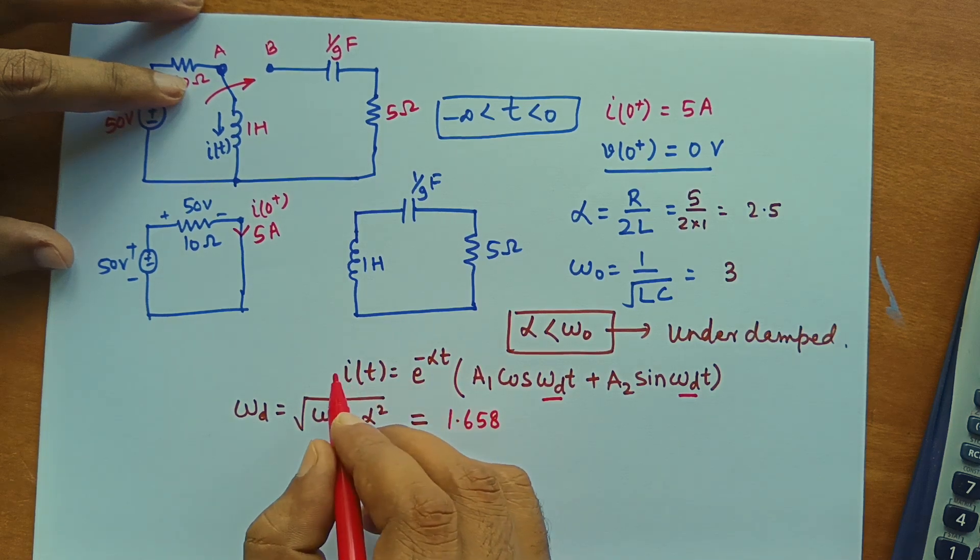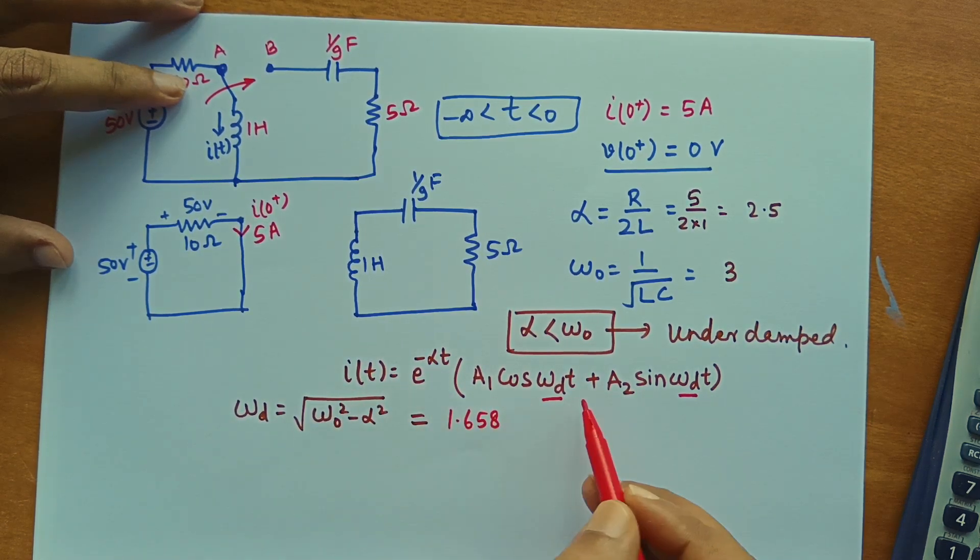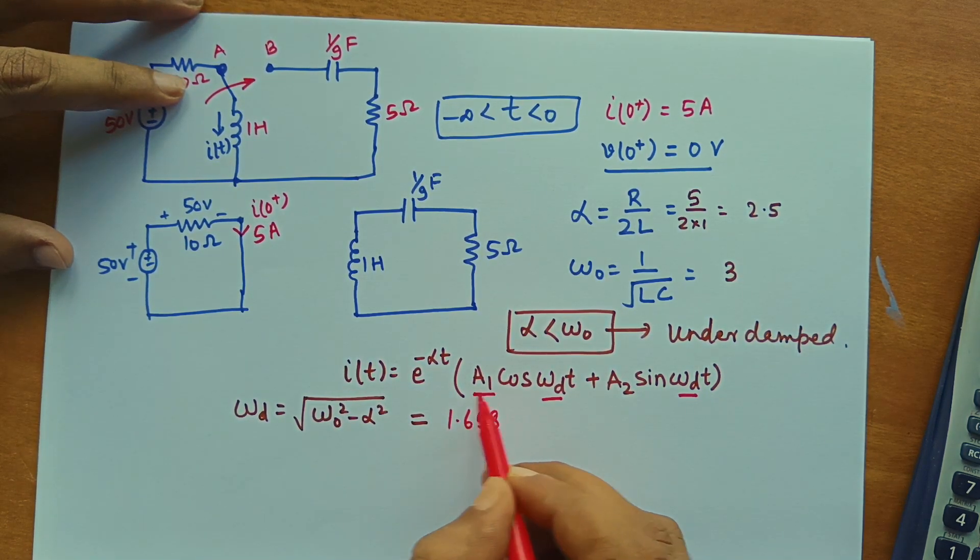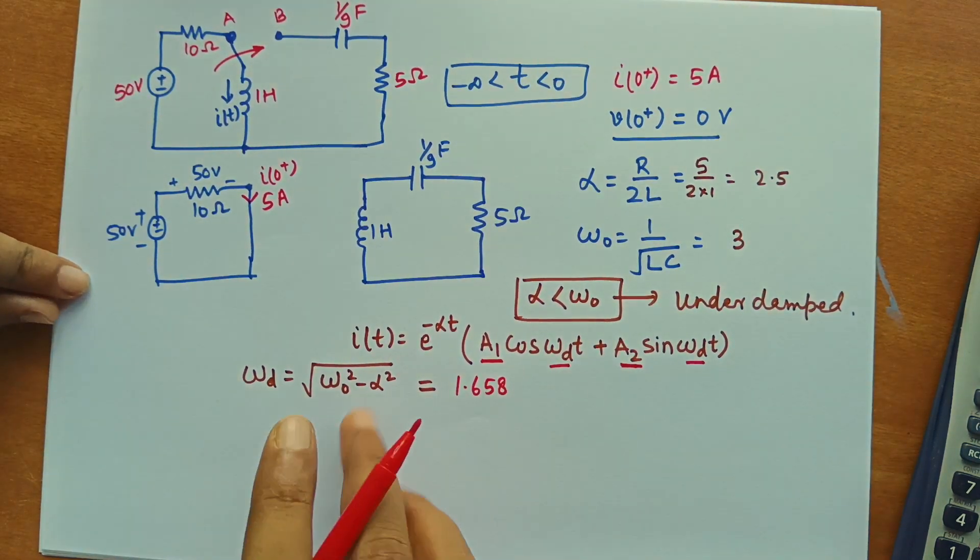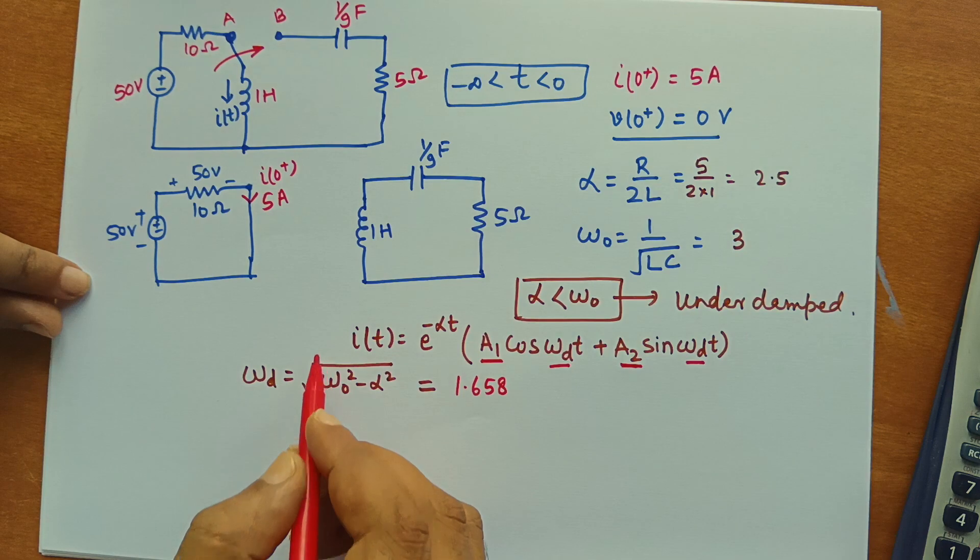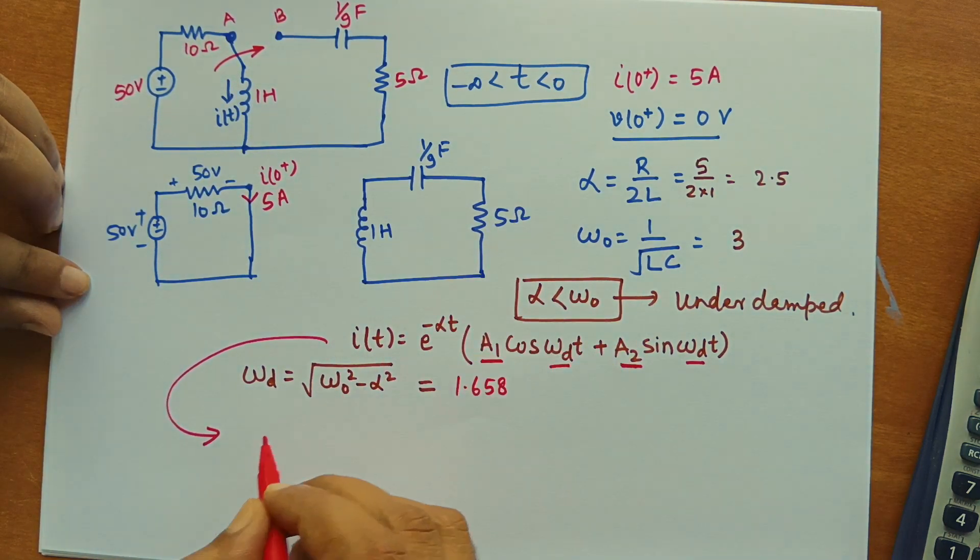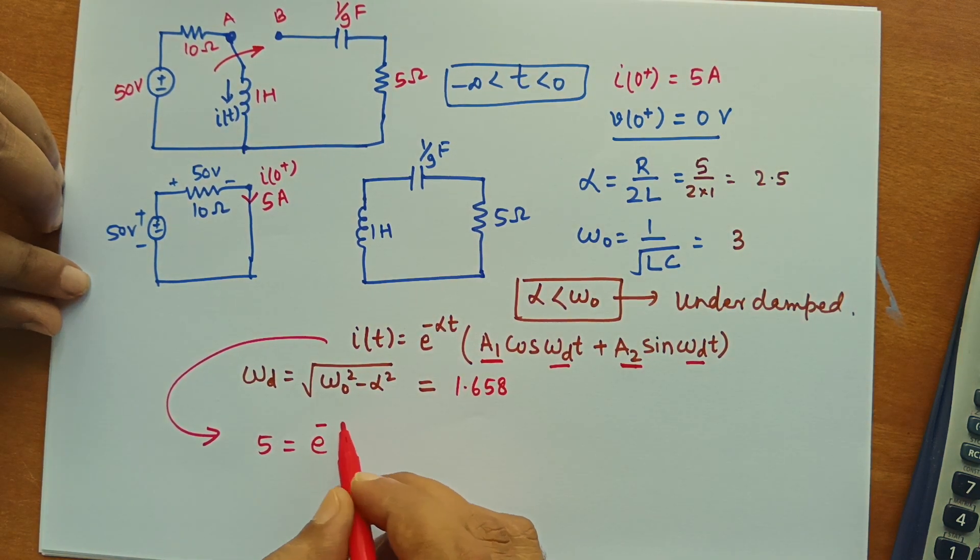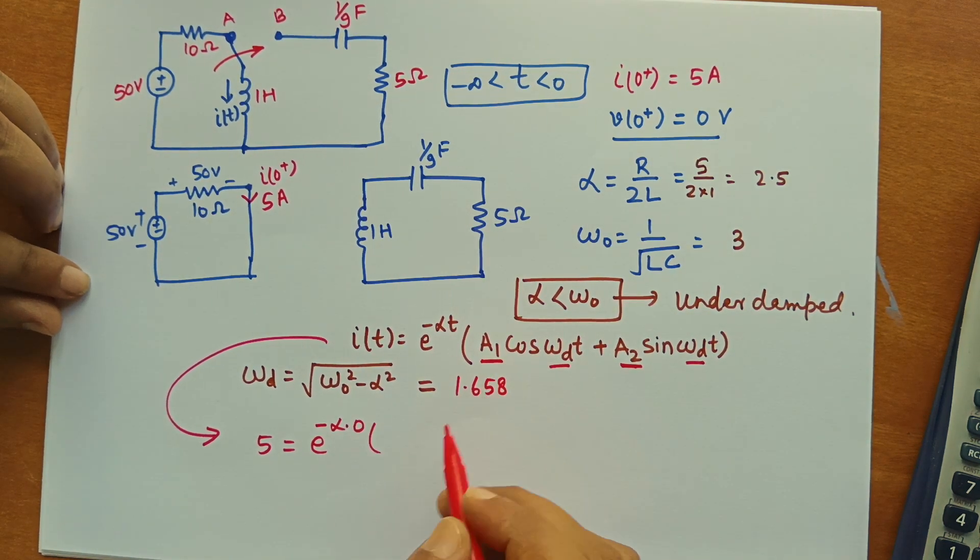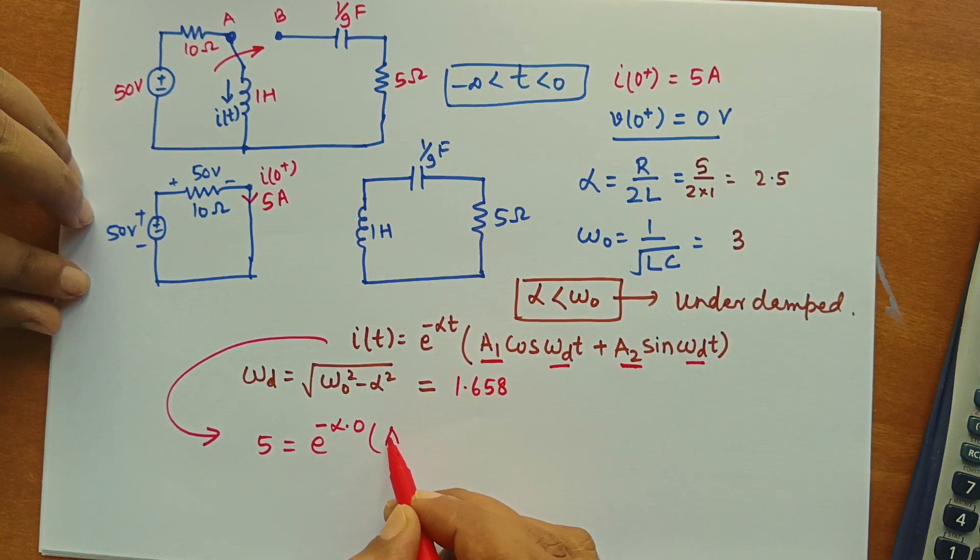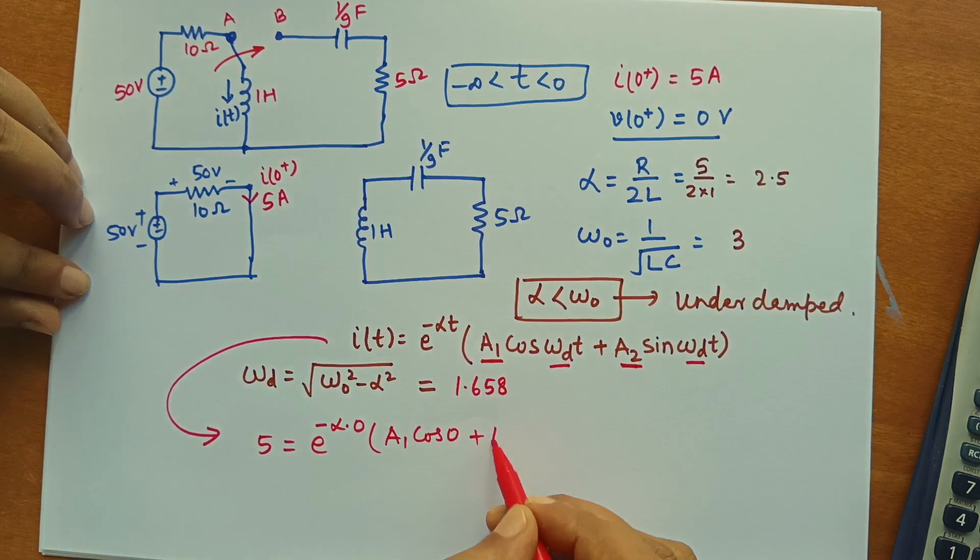So in this expression to find final equation, we need to know this A1 and A2 constant for which we are going to apply the initial condition. So when we apply the initial condition means I 0 plus then it will become 5 equal to e to the power minus alpha into 0. Then A1 cos 0 plus A2 sin 0.